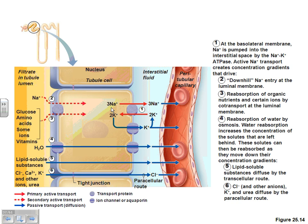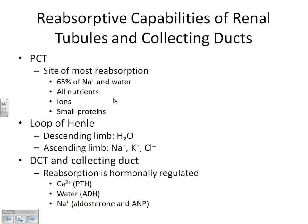Do you understand that at the proximal convoluted tubule we do almost all of our reabsorption? At that point, is there much in the blood surrounding the PCT? Very little. Is there a lot of stuff in the filtrate? Yeah, because we just put all of it in there — that's why we do most of our reabsorption there. The collecting duct doesn't really do anything except deal with the movement of water and sodium, and that's only hormonally controlled.